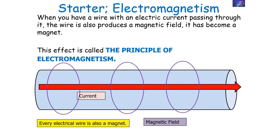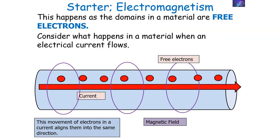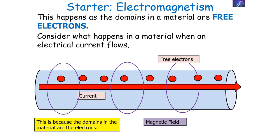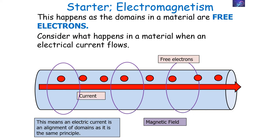When you have a wire with an electrical current passing through it, the wire will also produce a magnetic field — it has become a magnet. This effect is known as the principle of electromagnetism, meaning every electrical wire is also a magnet. A material which becomes a magnet when a current passes through it is called an electromagnet. The movement of electrons in a current aligns them all in the same direction, meaning the domains in the material are all aligned together, producing a magnetic field around the material.